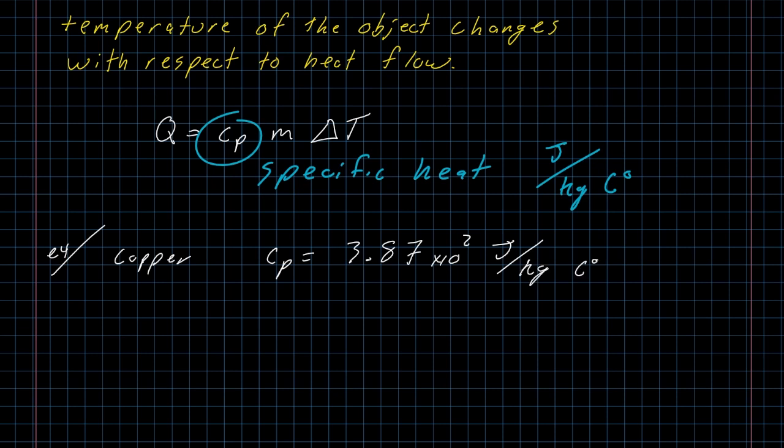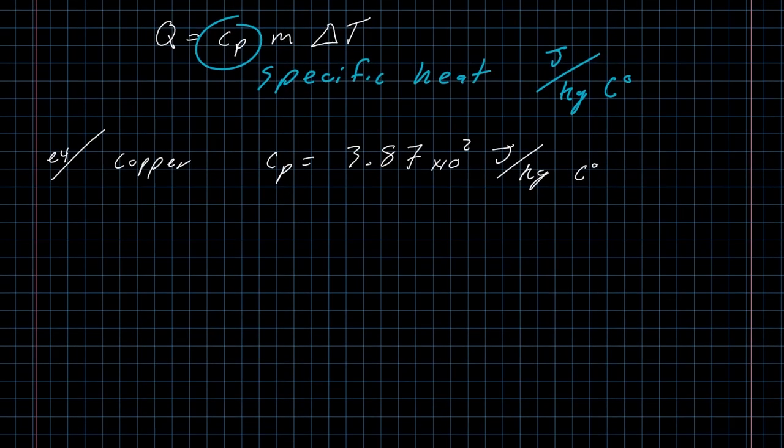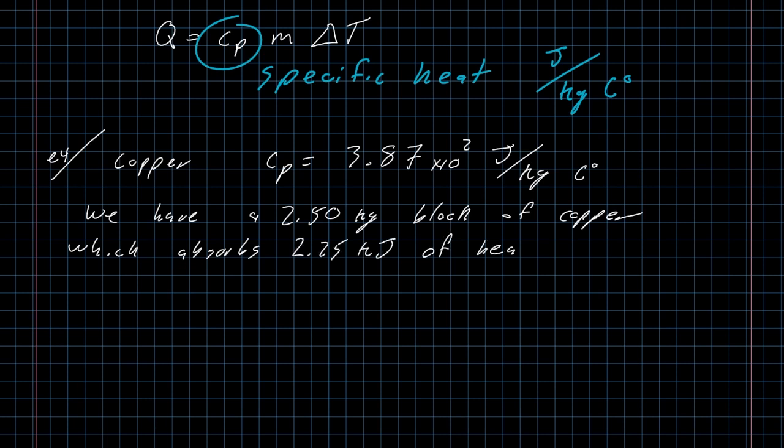Our first example here: copper has a specific heat of 3.87 times 10 to the second. I guess we could have just written that as 387 but that's not how the table has it written. We just look up the specific heat on a table for a particular material. Let's say that we have a 2.5 kilogram block of copper, and it is going to absorb 2.25 kilojoules of heat from some high temperature object being placed on top of it.